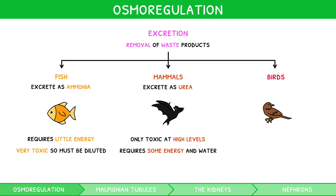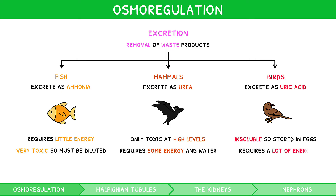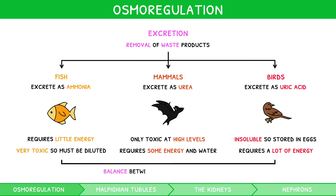Birds excrete their nitrogenous waste as uric acid, which is advantageous as it is insoluble in aqueous solutions and so can be stored within eggs, and it requires no water to dilute. However, it requires a great deal of energy to produce. It is therefore clear that the form of nitrogenous waste produced is a balance between toxicity and energy input.